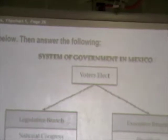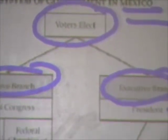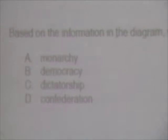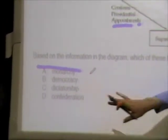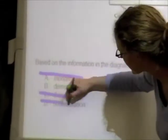Now there's a chart — these are a little hard to break down, so look at the chart first and then look at the question. Keywords: voters elect, executive branch with a president, legislative branch with a national congress, a senate, and a federal chamber of deputies. The heading says it's about Mexico. I also see 'confirm presidential appointments,' a Supreme Court, and 'appoints judges.' The question asks: based on this diagram, which best describes the system of government of Mexico? A monarchy — I don't see a king or queen. A democracy — people vote, and voters are participating up here. Dictatorship — you wouldn't have voters in a dictatorship. Confederation — that's just there to trick us. The correct answer is B, democracy.